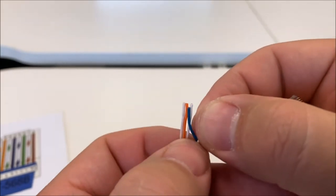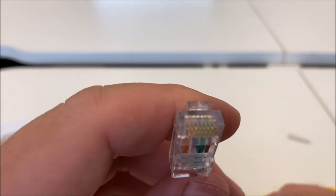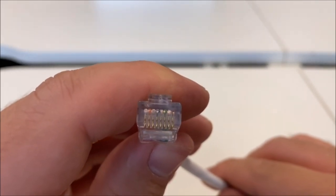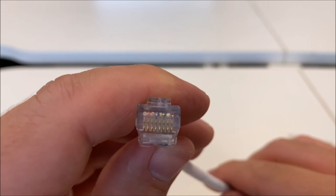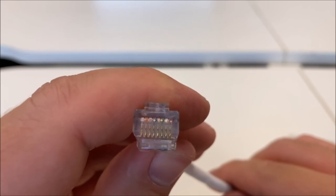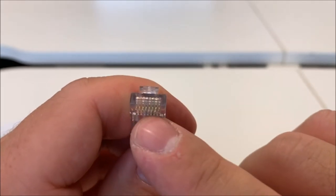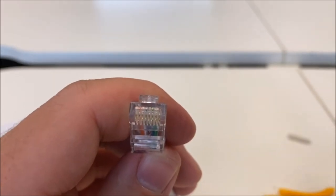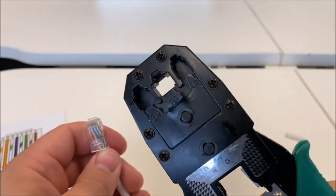So now I've pushed them all in. Now you see at the end, if I get it in focus, all the little copper ends—that's the main aim. As long as you can see the copper ends, when I put it in the crimper, these gold pins will cut into them and that will make your connection. So I take my crimping tool. This is an RJ45 crimping tool.